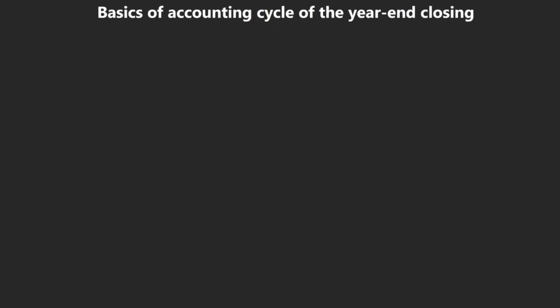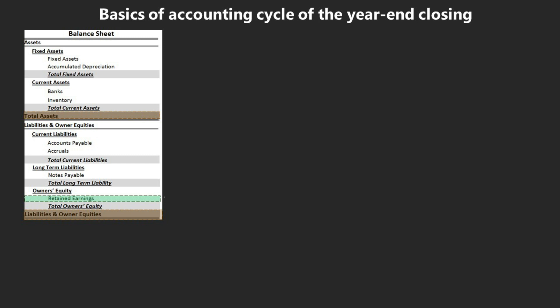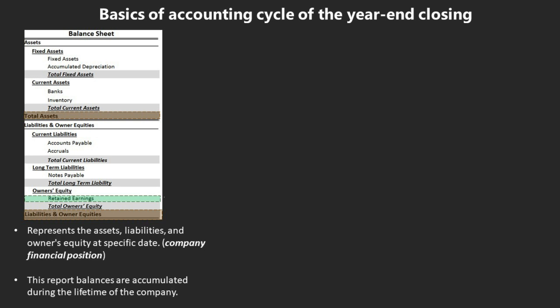Let's start from year-end close from the accounting perspective. The year-end close is closing the books of the current year and moving its balances to the next year. We need to remark the difference between balance sheet accounts and P&L accounts. The balances of balance sheet accounts are moved to the next year as opening balances, and are accumulated during the lifetime of the company.